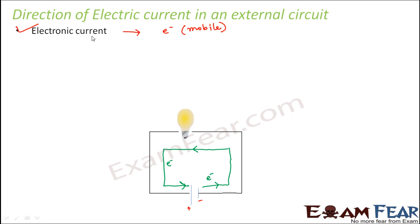However, it is not necessary that in all objects electrons act as charge carriers. In many other circuits, positively charged particles also act as carriers. In fact, in certain cases both positively and negatively charged particles act as charge carriers. When you learn about semiconductors in higher classes, you will learn about positive and negative charge carriers. So electronic current considers electrons moving from negative to positive terminal.